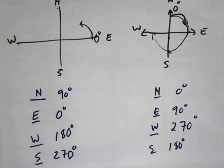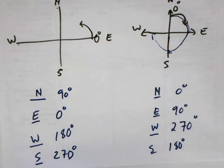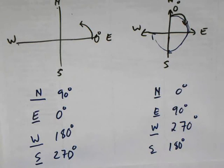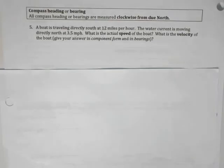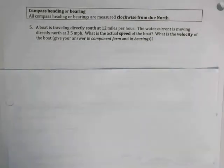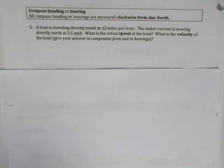This is pretty annoying but it's something we have to live with because these are two very common systems and they don't quite agree, so we have to be very careful in how we handle these problems. Let's look at a real world example: a boat is traveling directly south at five miles per hour.